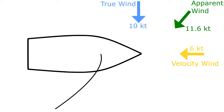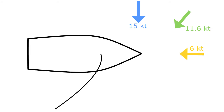Now that we understand apparent wind, let's look at how it can shift. Consider what happens when we hit a puff. Say we're sailing along and the same 10-knot breeze increases to 15 knots, but still from the same direction. At the moment the puff hits our boat, the speed is still 6 knots and thus the velocity wind is 6 knots. The combination of these two winds results in an apparent wind of 16 knots and the direction shifts closer to the true wind direction. This will feel like a lift, and you will either sheet closer or point higher to trim for it. Every time you hit a puff you'll get the same shift — a lift.